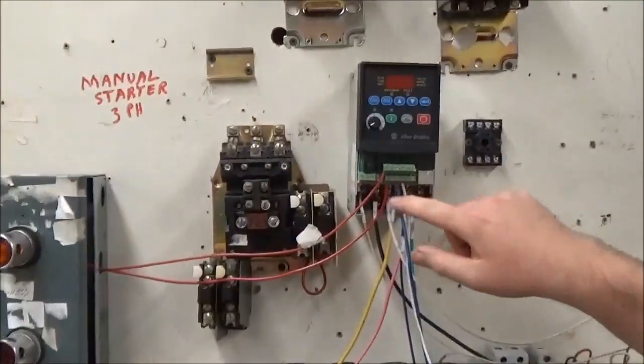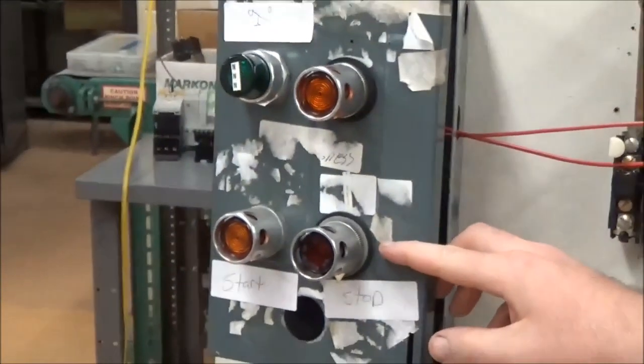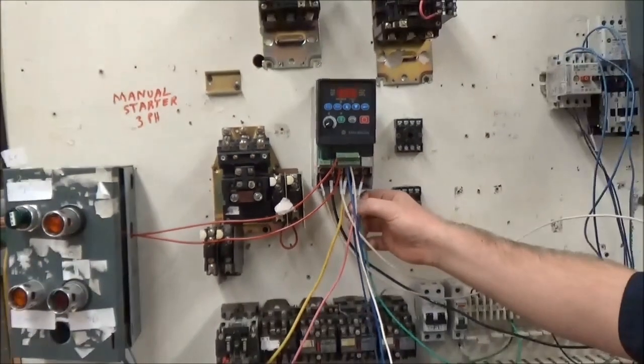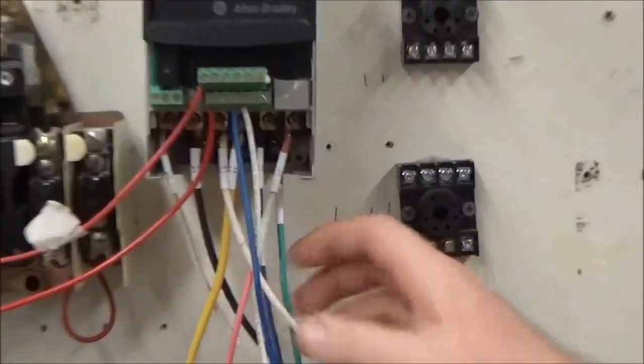Then we got our stop. We got 24 volts coming out, runs through a normally closed push button to our stop. Then we got T1, T2, and T3 coming out, going to our motor which is loaded for low voltage. On this particular motor it's 230 volts.